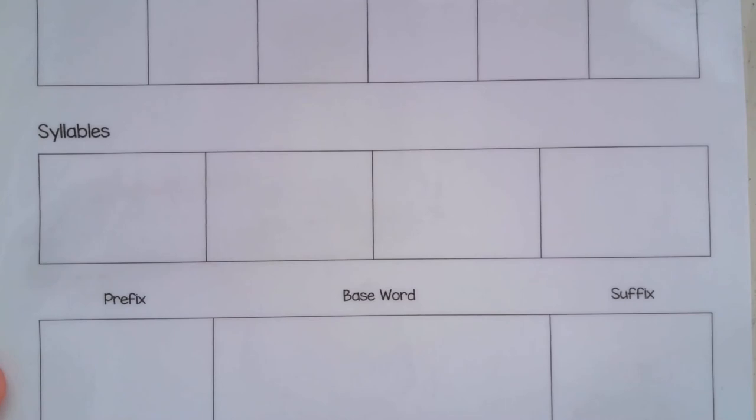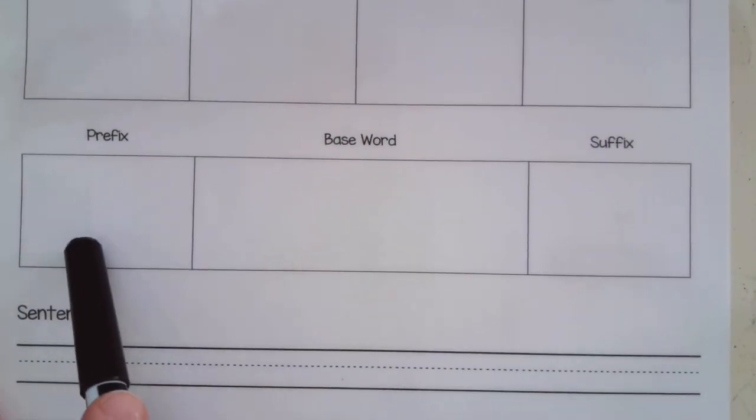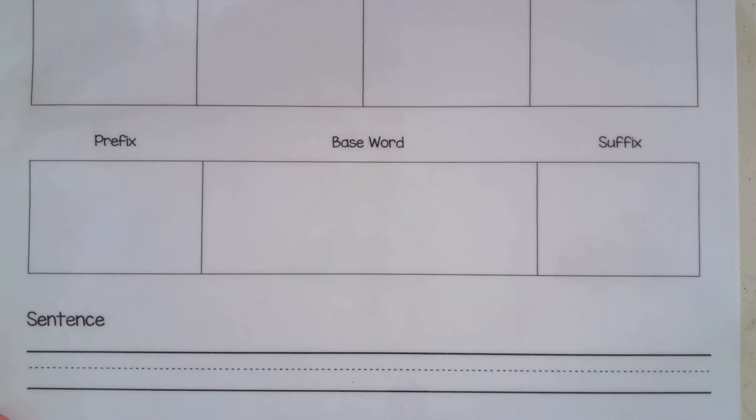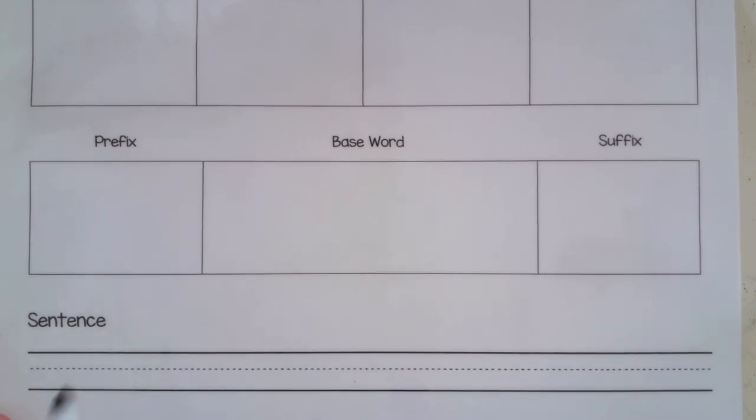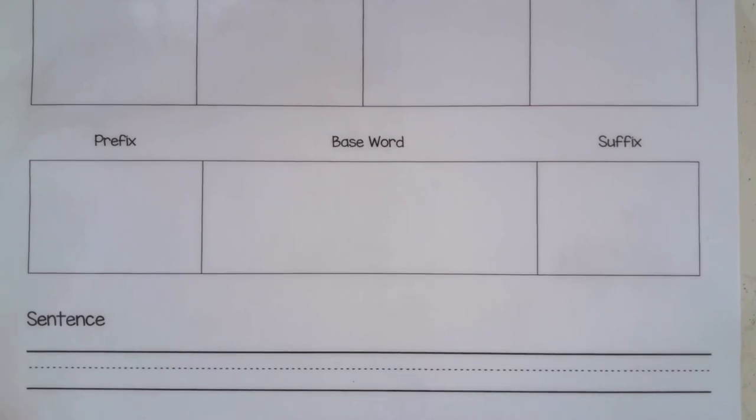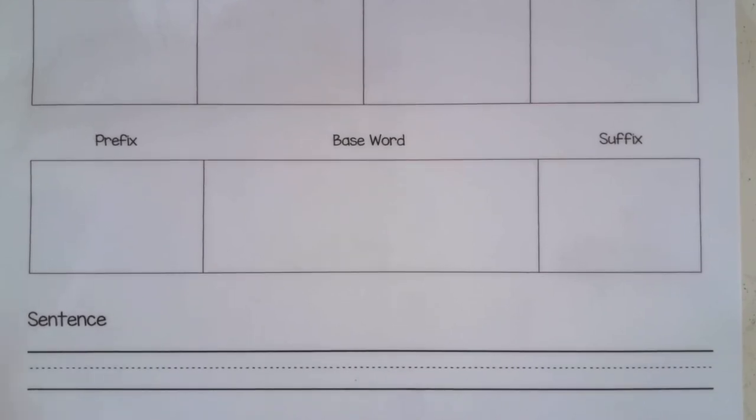And then we have down here if you're having students spell words with a prefix or suffix, you can have them use this box. These boxes help students with morphology. So let's say I'm asking the students to write the word unpacking. I would have them say the whole word unpacking, and then I would ask them what's the prefix? What's the base word? What's the suffix?